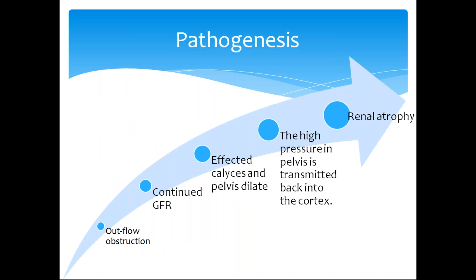What is the pathogenesis? There will be obstruction to the outflow, which leads to dilation of the calyces and cortical atrophy. Even with outflow obstruction, the kidneys continue their own function — filtering the blood. So the filtered GFR will be circulated back into the lymphatics and absorbed. This leads to pressure accumulation, causing the calyces to dilate. The high pressure in the pelvis is transmitted back into the cortex, leading to compression of the renal vasculature and atrophy.